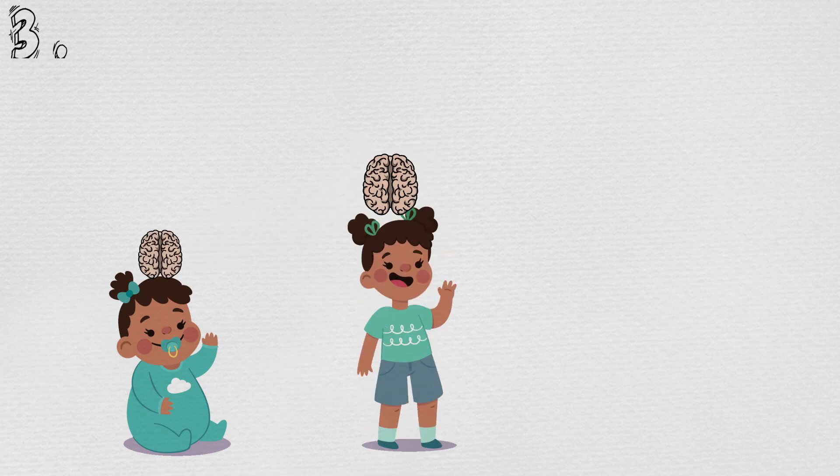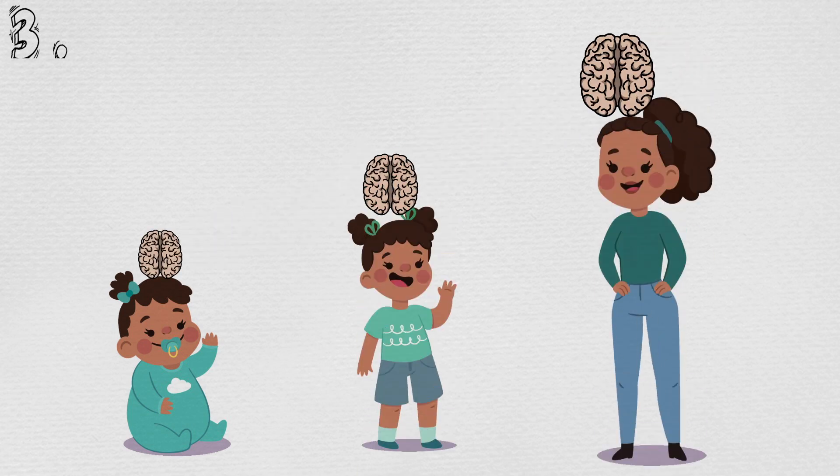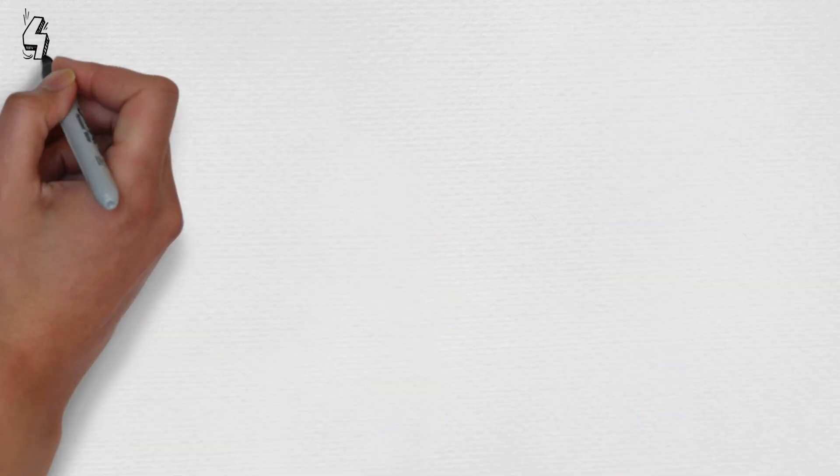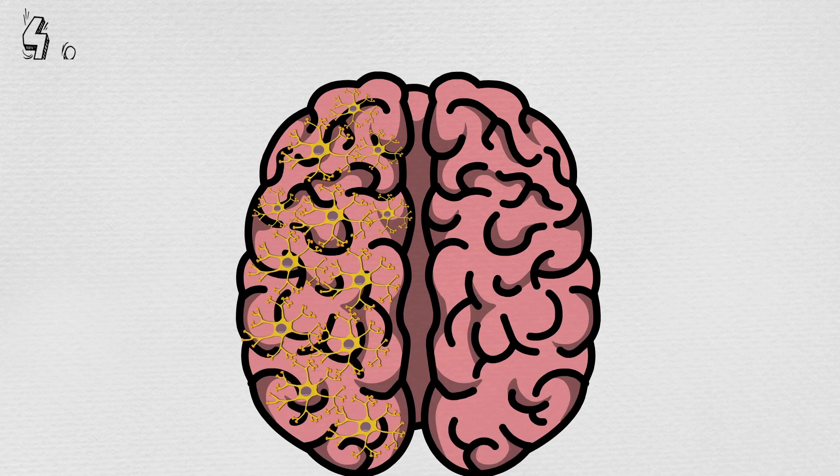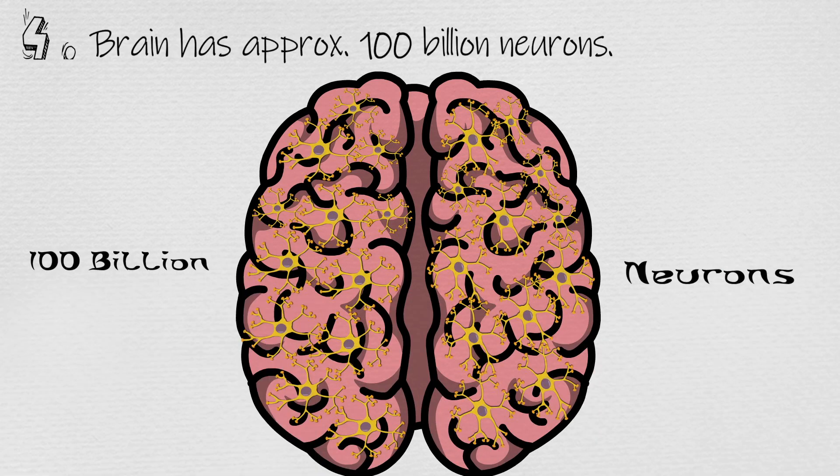Number three: A human brain life ke first year mein apne size se teen guna zyada bada hai aur yeh tab tak bharata rehta hai jab tak hum 18 saal ke nahi ho jate. Isn't that cool?